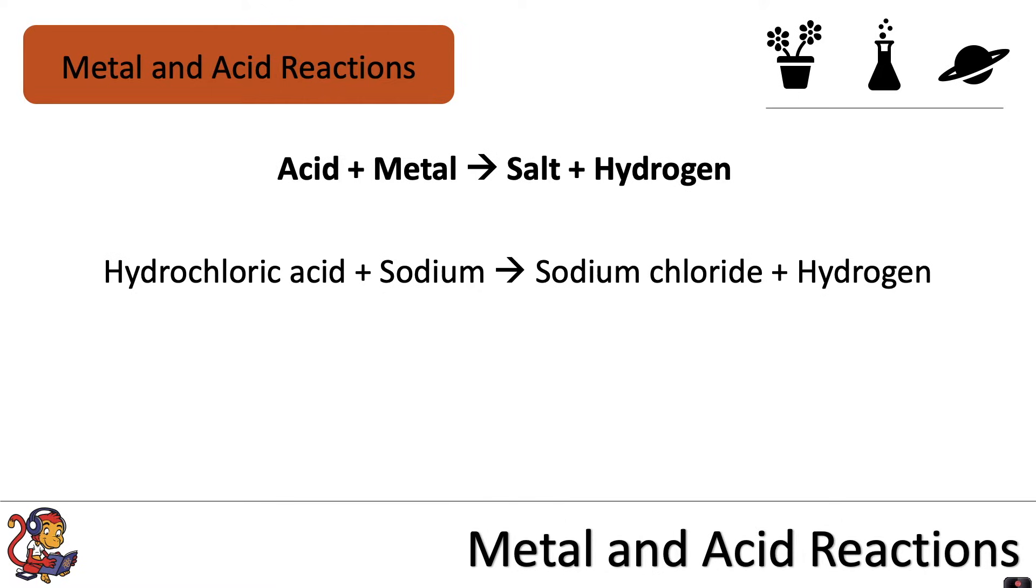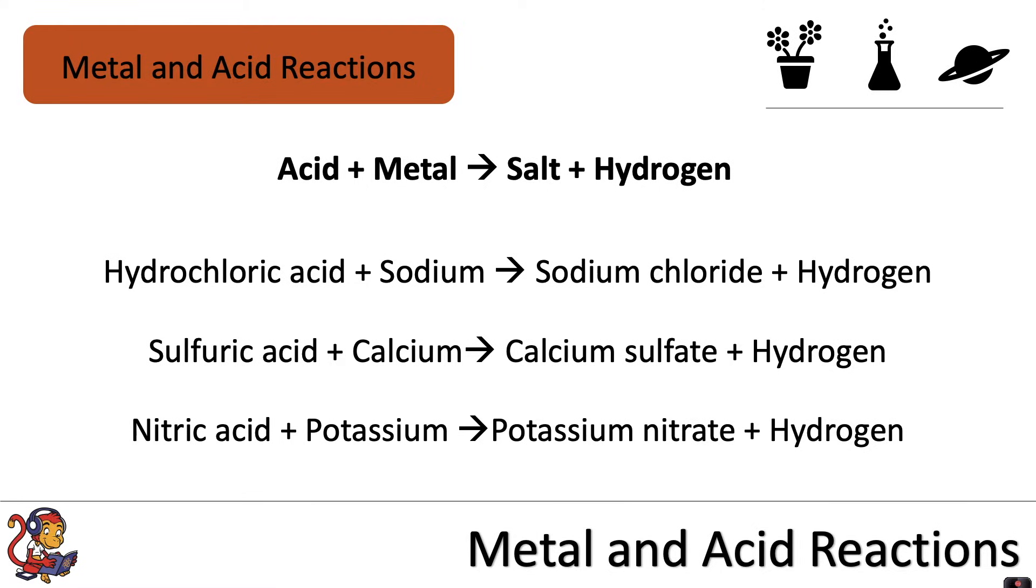If we reacted hydrochloric acid and the metal sodium, we would produce the salt sodium chloride plus hydrogen gas. If we reacted sulfuric acid with the metal calcium, we would make the salt calcium sulfate plus hydrogen gas. If we reacted nitric acid plus potassium, we would make the salt potassium nitrate plus hydrogen gas.